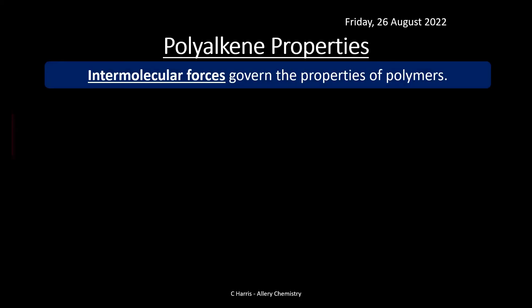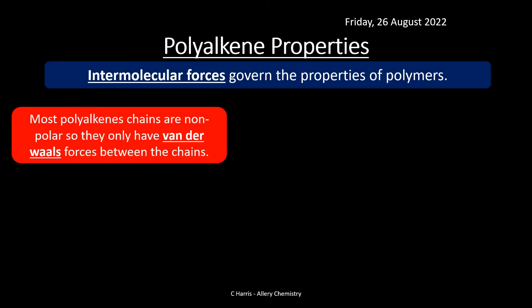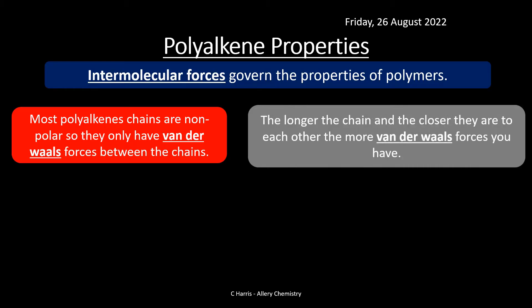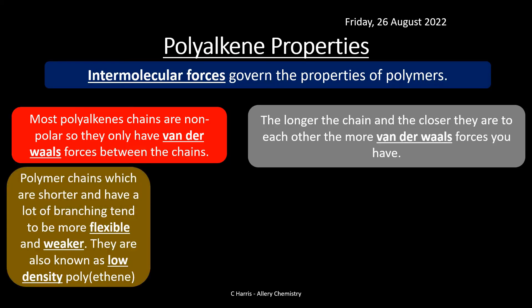Looking at polyalkene properties — intermolecular forces govern the properties of polymers. Most alkene chains are non-polar, so they only have weak van der Waals forces between the chains. The longer the chain and the closer they are, the more van der Waals forces you have. Polymer chains that are shorter and have a lot of branching — groups sticking out from the chain — tend to be more flexible and weaker, not as strong as straight-chain versions.